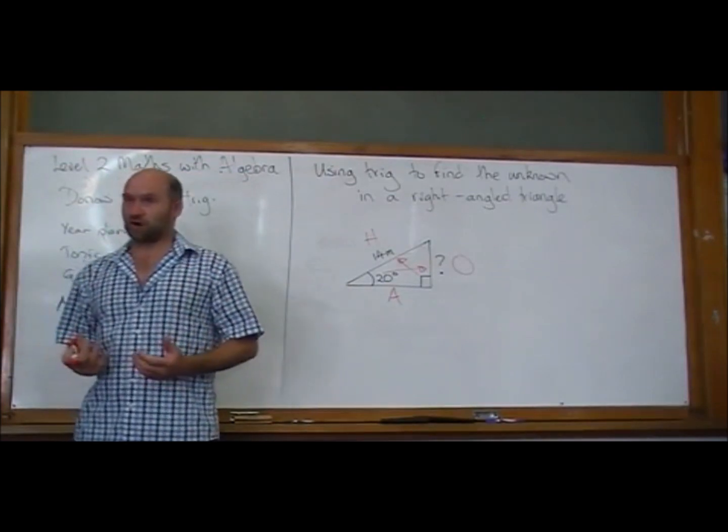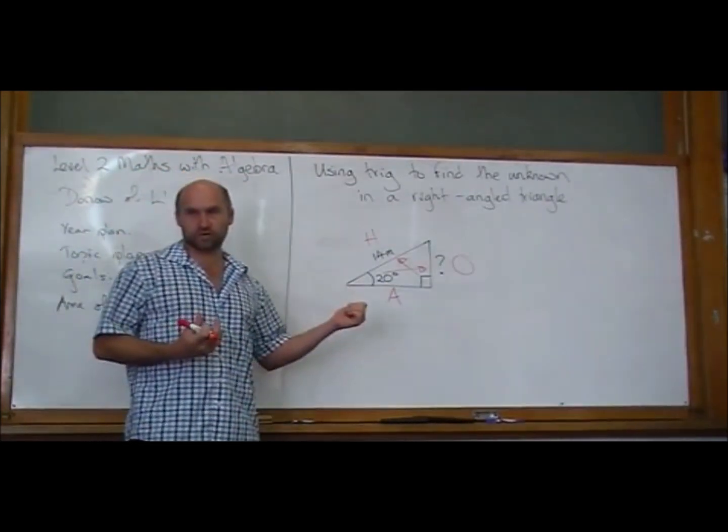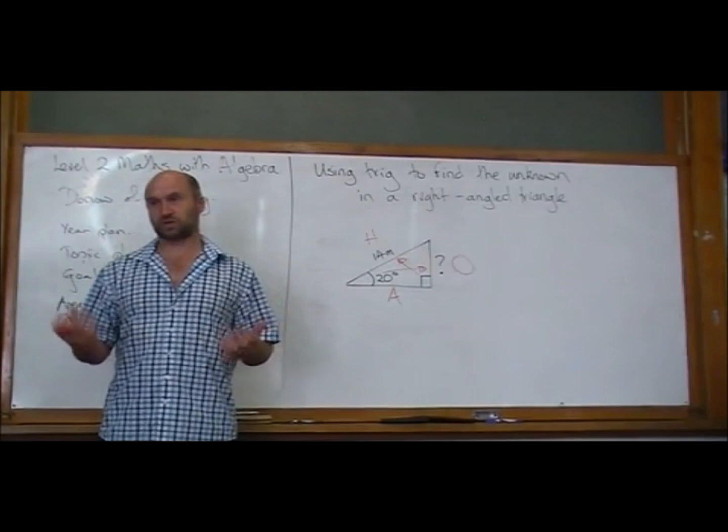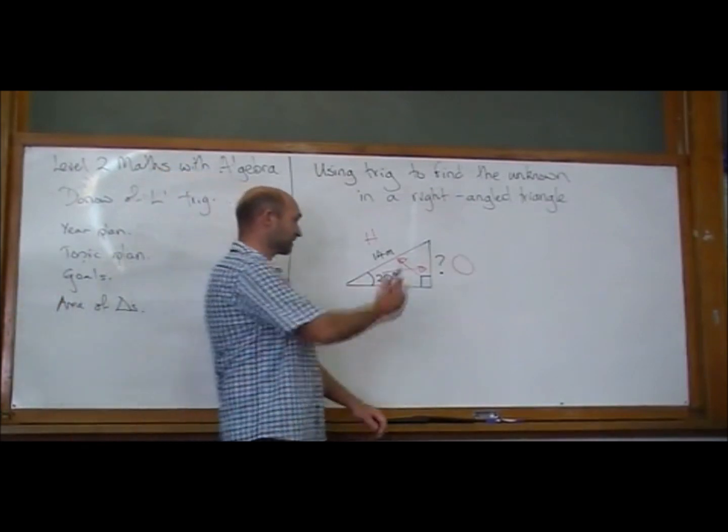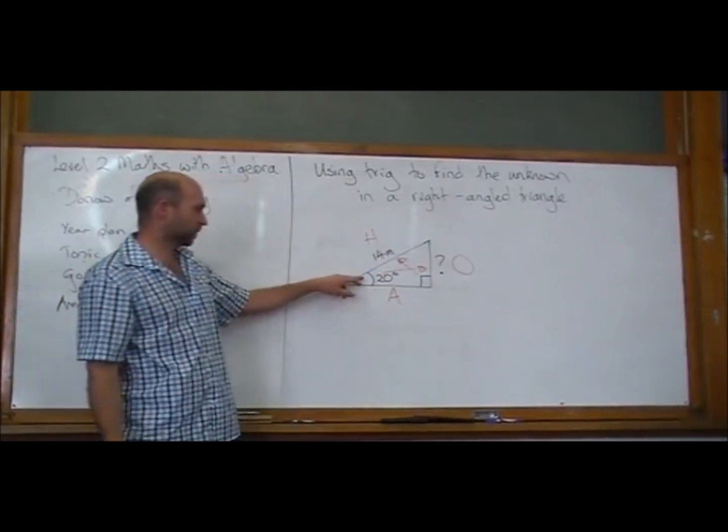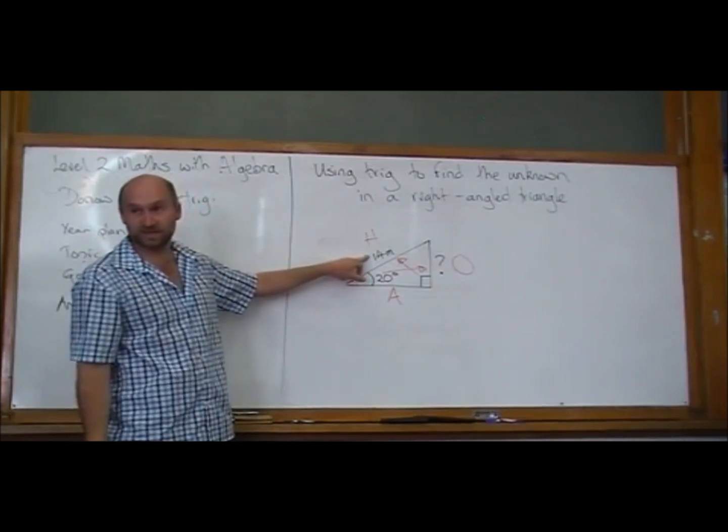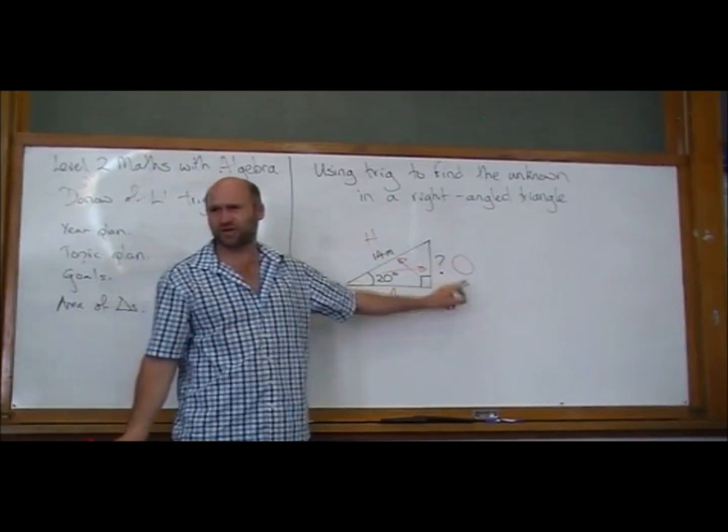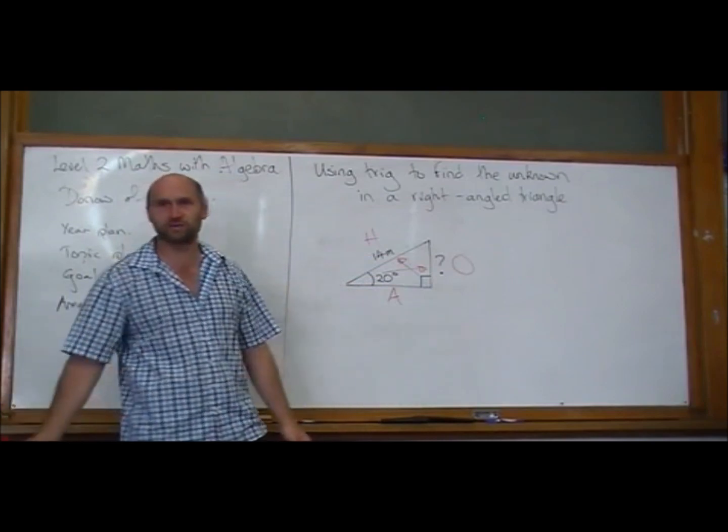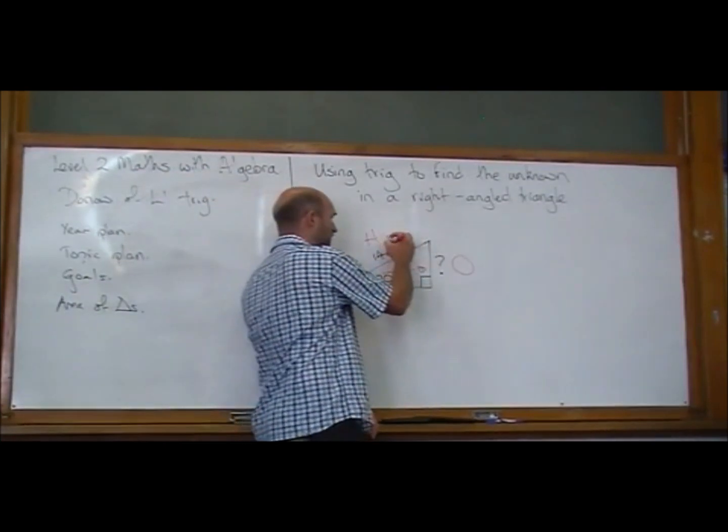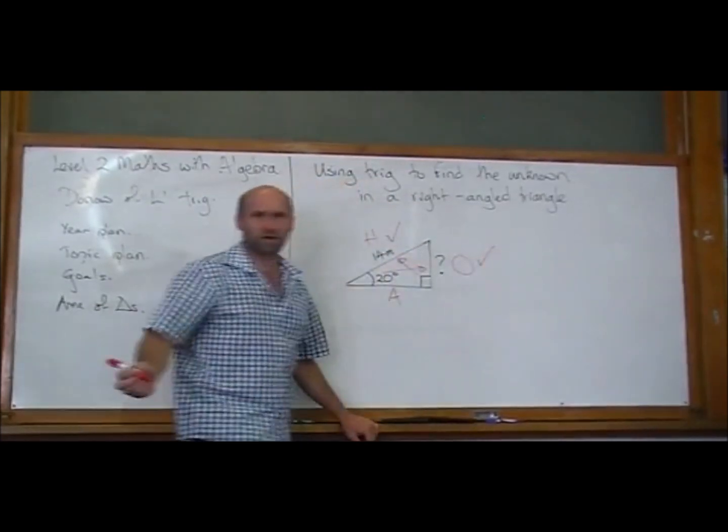Usually with these trig problems, we'll find that we've got two of those three. And in this case, looking at this example, we've got a 20 degrees angle. We've got 14 metres on the hypotenuse, and we're trying to find the opposite side. There's a question out there. That's what we're trying to find. And so we're interested in the H and the O.